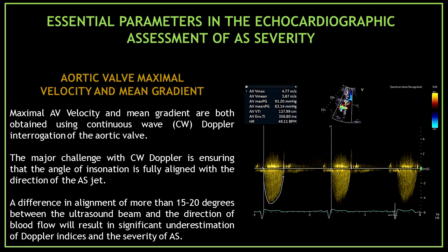The first parameters are the aortic valve maximal velocity and mean gradient. Both are obtained using continuous wave Doppler interrogation of the aortic valve. The major challenge with continuous wave Doppler is ensuring that the angle of insonation is fully aligned with the direction of the aortic stenosis jet. A difference in alignment of more than 15 to 20 degrees will result in significant underestimation of Doppler indices and the severity of aortic stenosis.